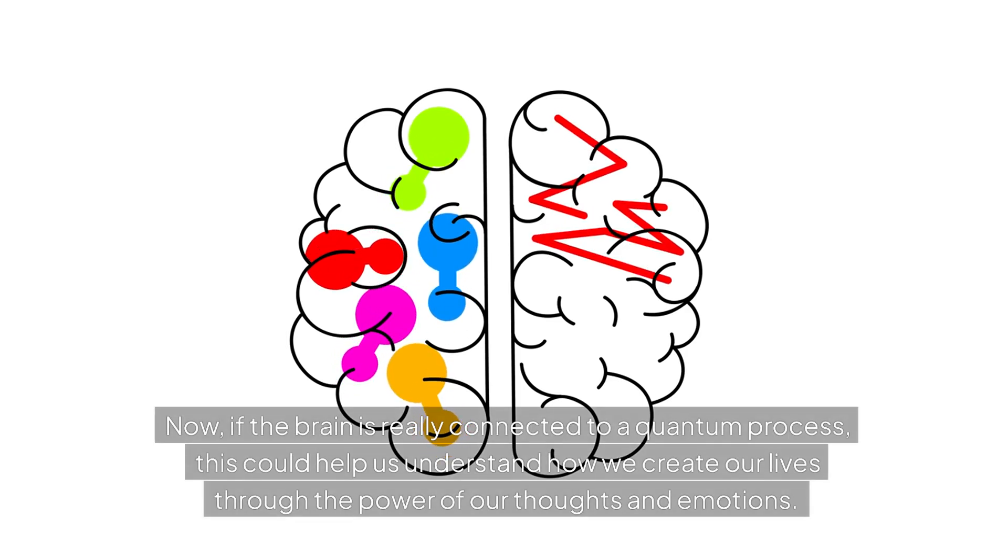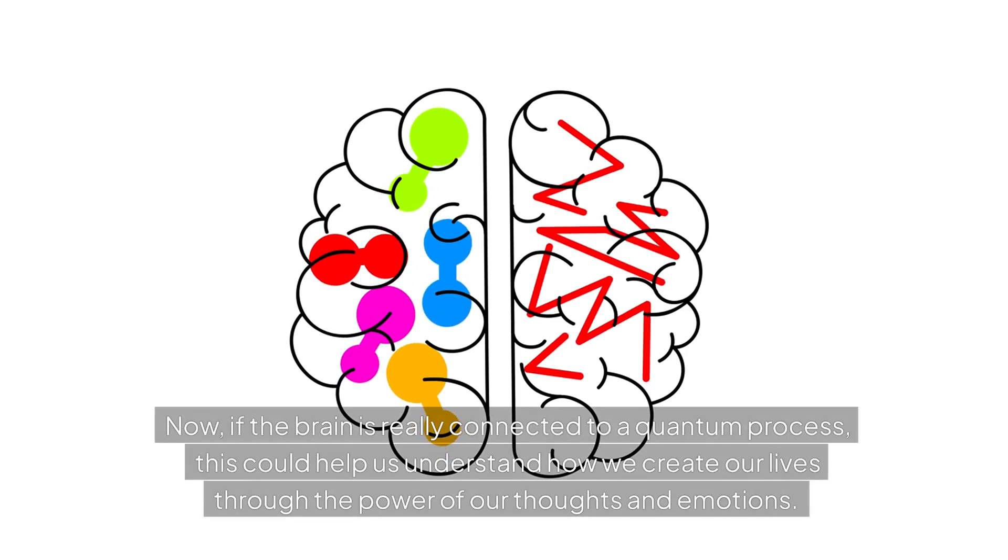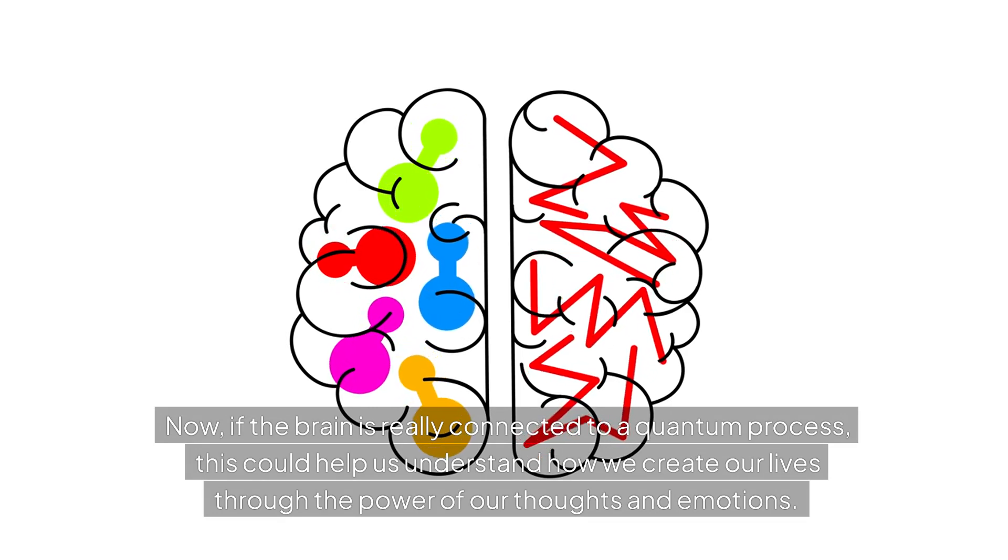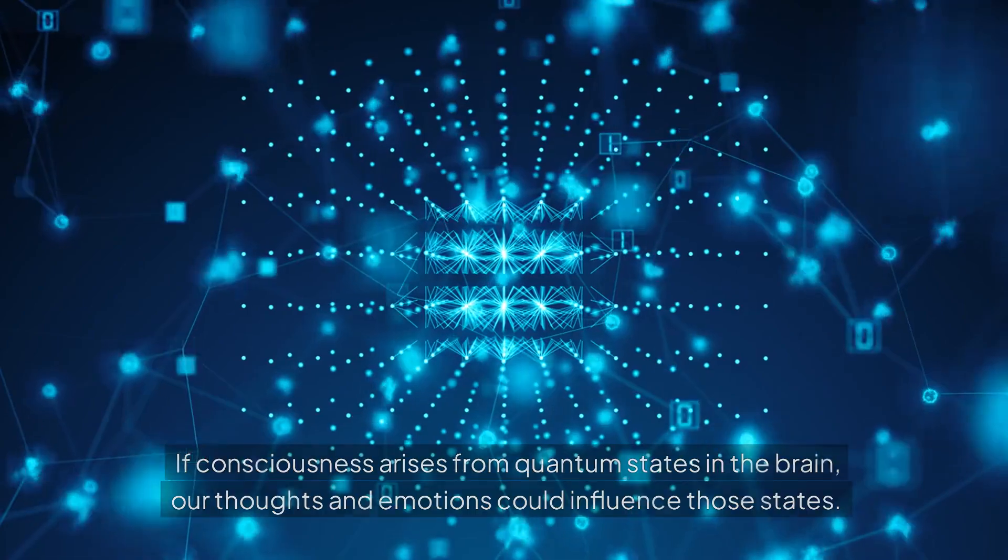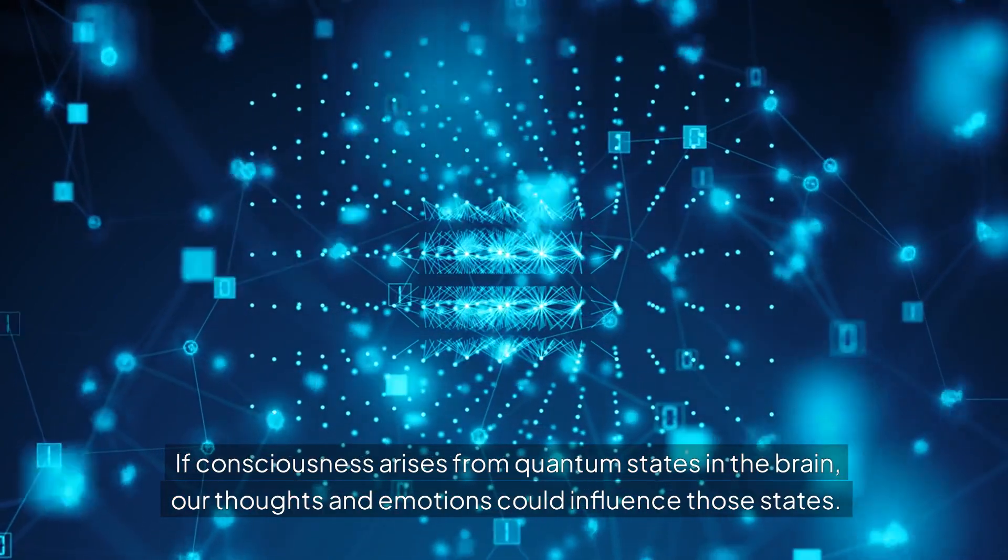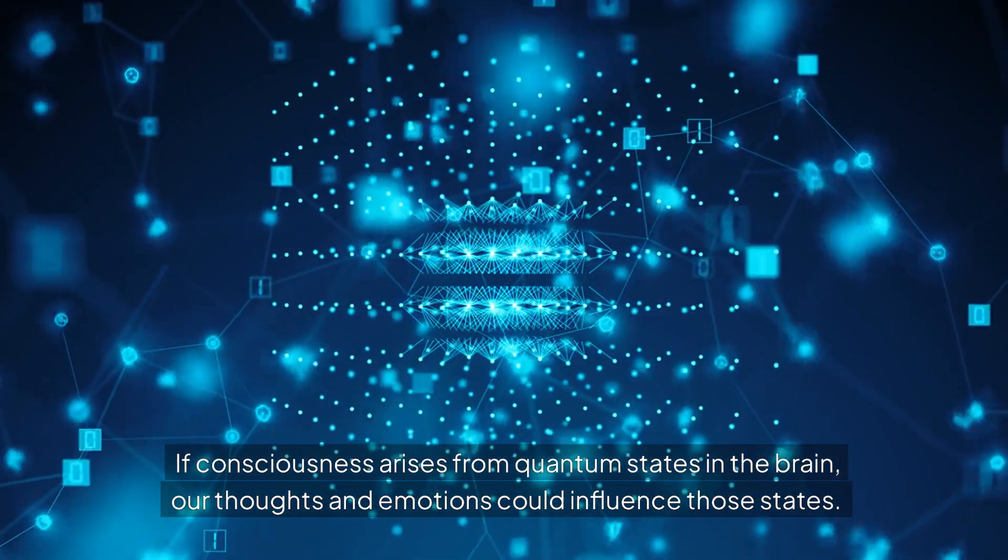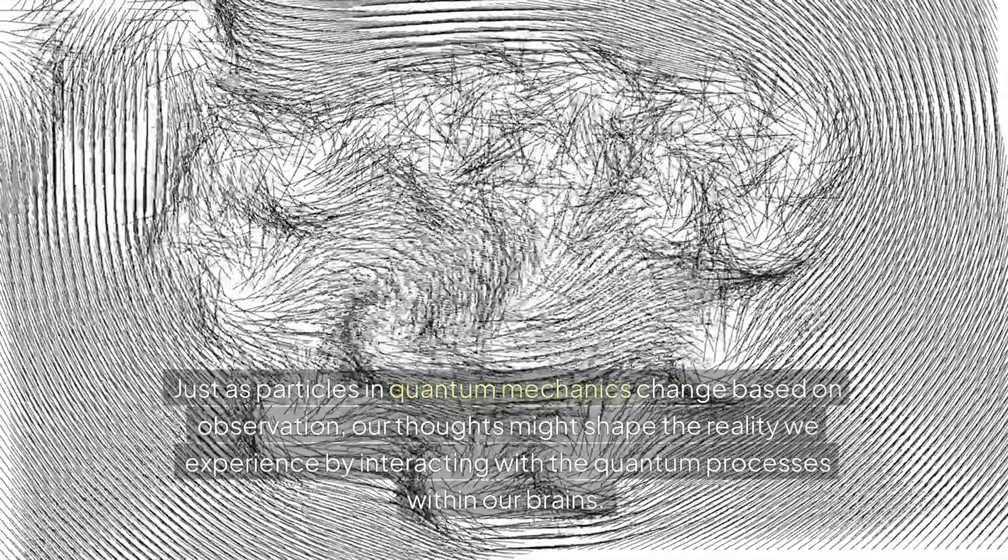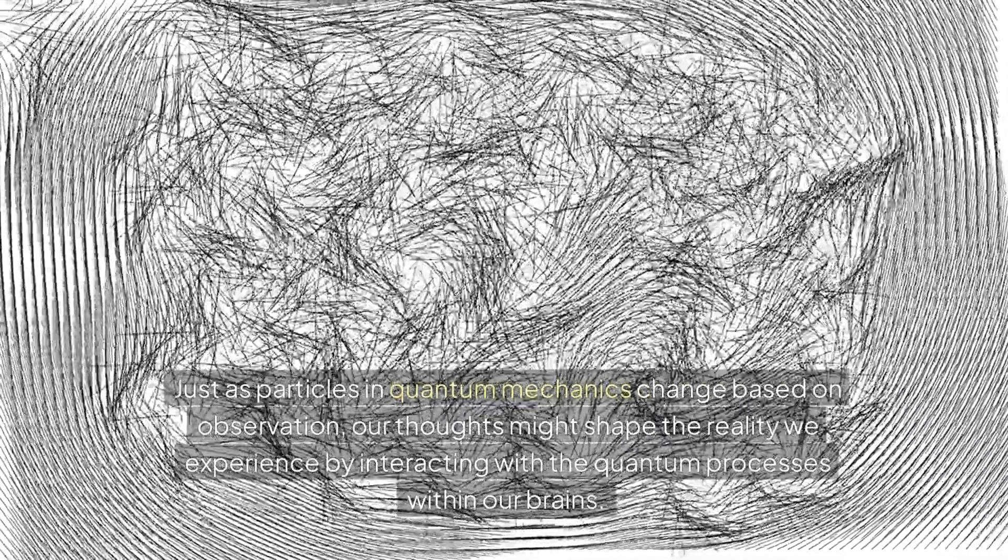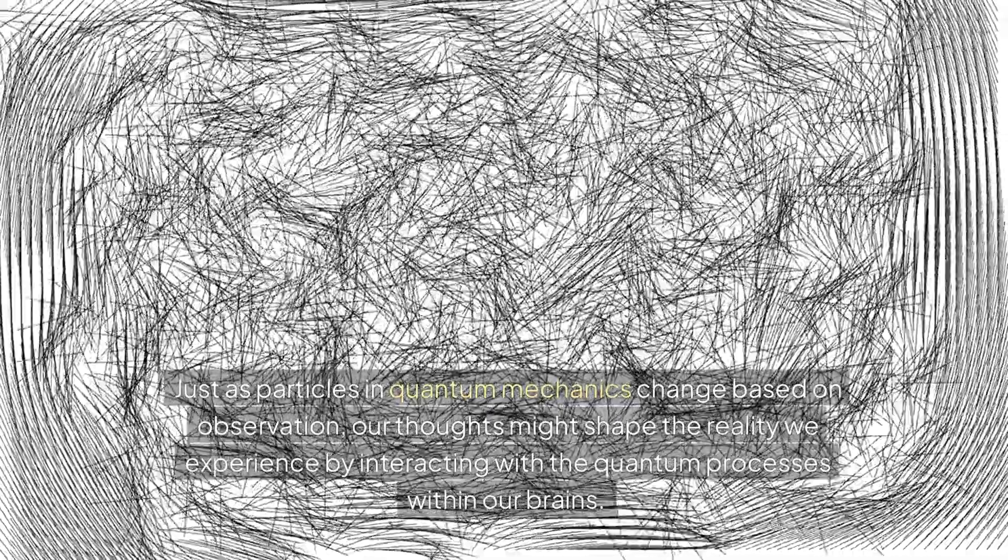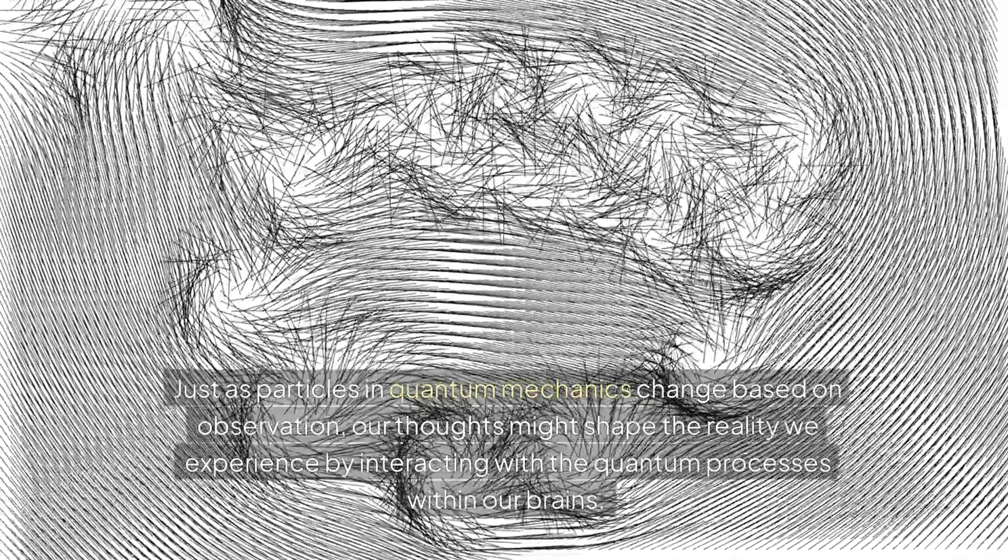Now, if the brain is really connected to a quantum process, this could help us understand how we create our lives through the power of our thoughts and emotions. If consciousness arises from quantum states in the brain, our thoughts and emotions could influence those states. Just as particles in quantum mechanics change based on observation, our thoughts might shape the reality we experience by interacting with the quantum processes within our brains.